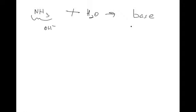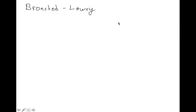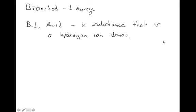Chemists Bronsted and Lowry developed a new definition of acids and bases. It doesn't dispute Arrhenius acids and bases — those still qualify — but it also incorporates substances that didn't fit the Arrhenius definition. In the Bronsted-Lowry definition, a Bronsted-Lowry acid is a substance that is a hydrogen ion donor — it donates hydrogen ions.